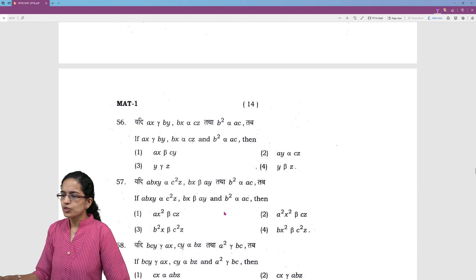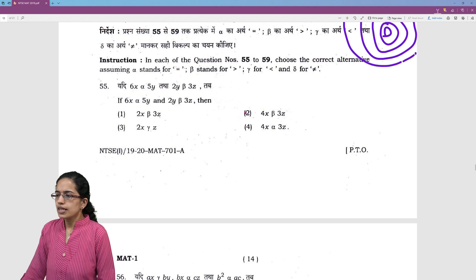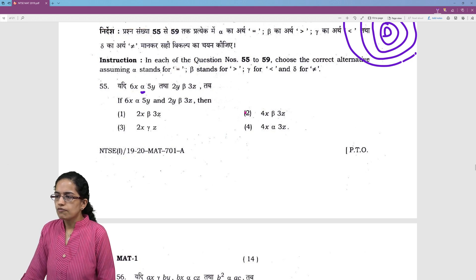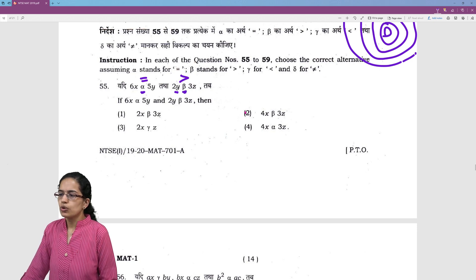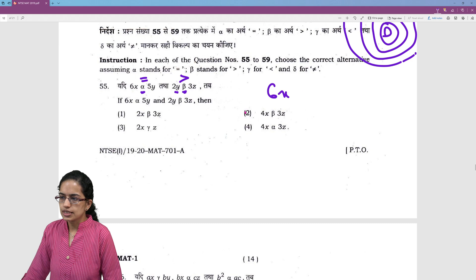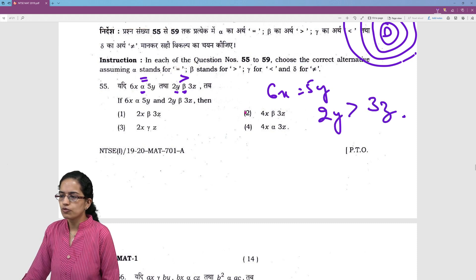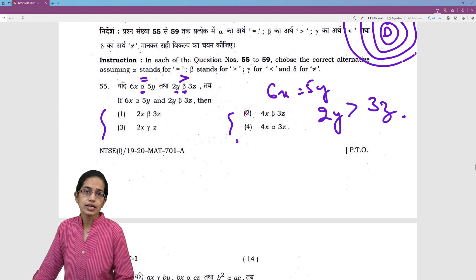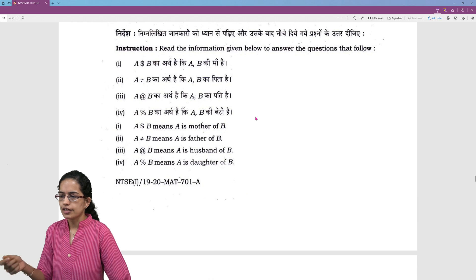Similarly, we have questions where we have to replace the signs and symbols. For example, here you would have alpha represented as equal to and beta represented as greater than. So, if 6x is equal to 5y, 2y is greater than 3z, you would have to find out which of these equations are correct. So, simple mathematical formulations to understand these kind of questions.